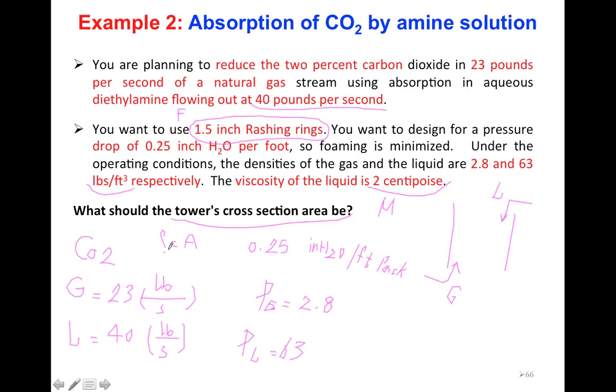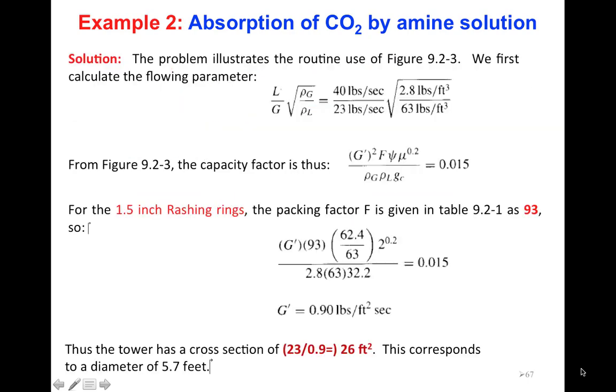In this question, we are going to use the Sherwood curve. We have the pressure drop that we want, all the densities, and the mass flow rate, so we can find the x-axis. We have the pressure drop and we can find epsilon. Once we have epsilon, we can put in that equation and find G'.